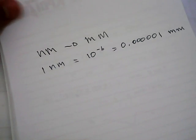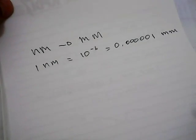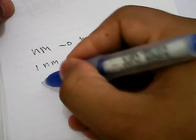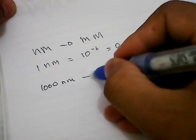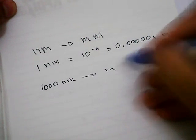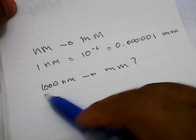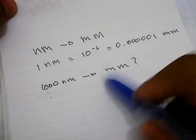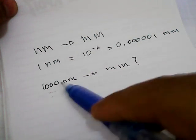For example, let's say you want to convert 1000 nanometers into millimeters. How much is 1000 nanometers converted into millimeters? Well, to solve this problem, the first thing you need to do is write down this number.